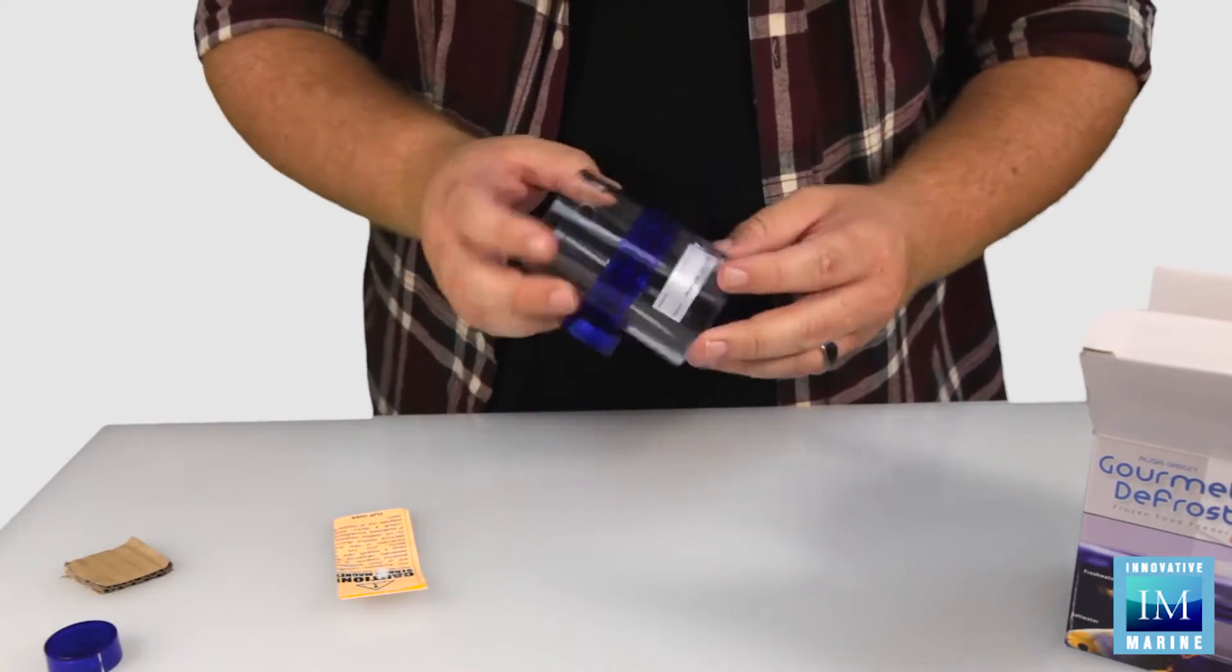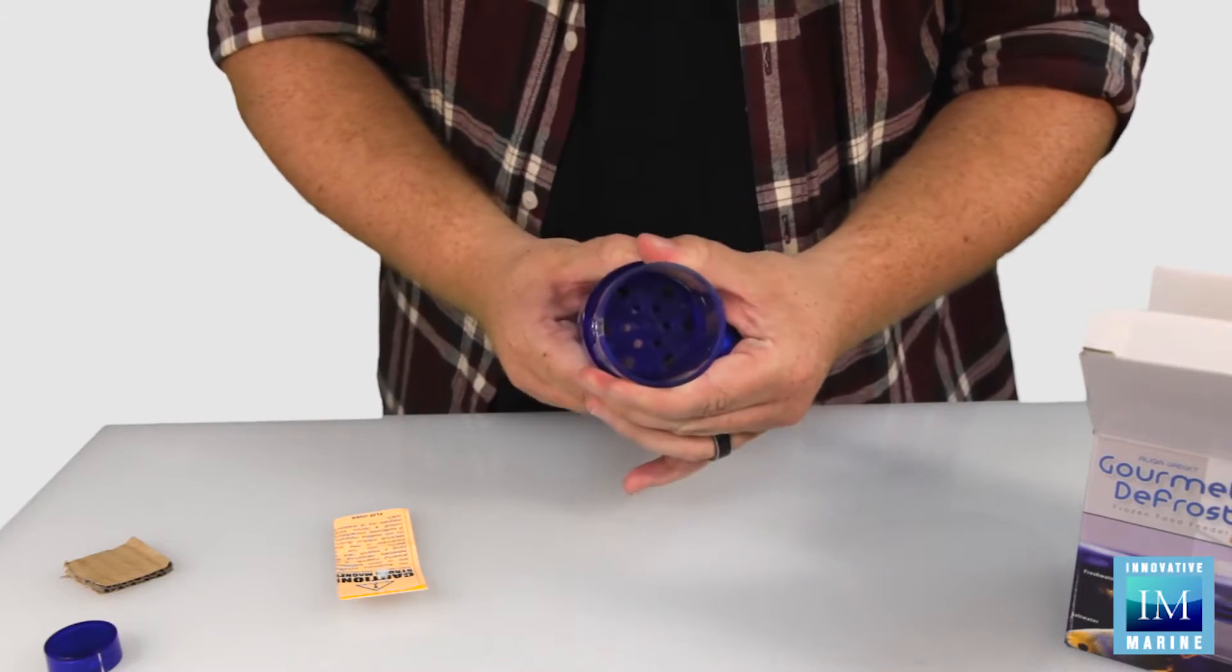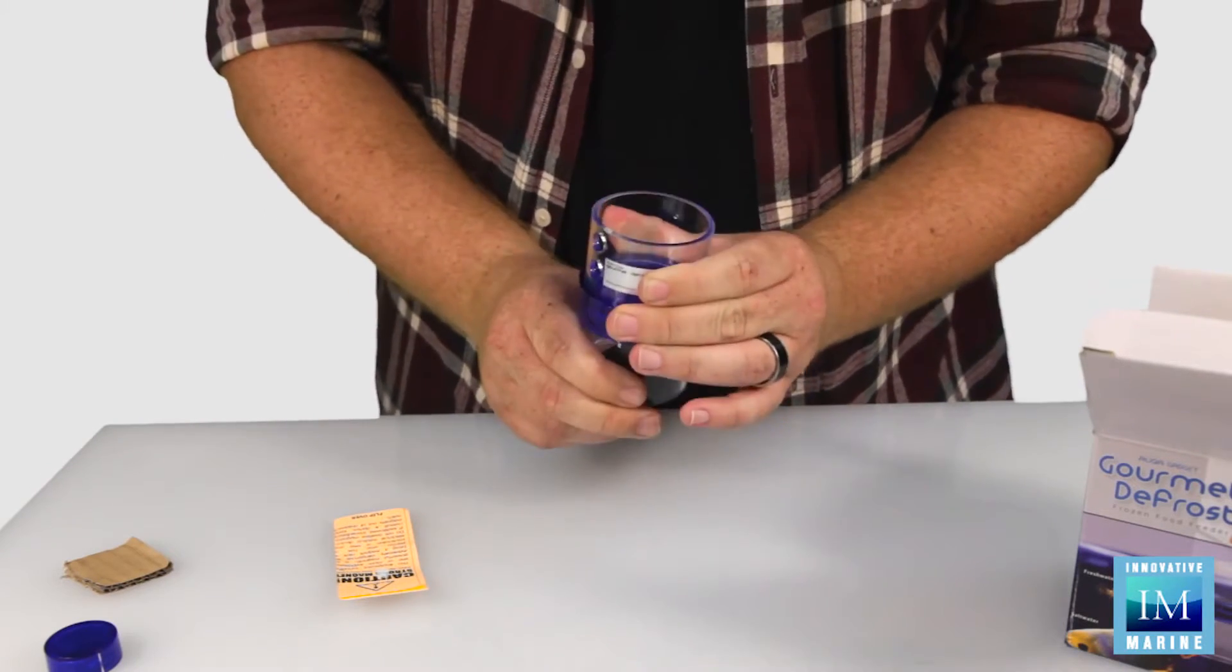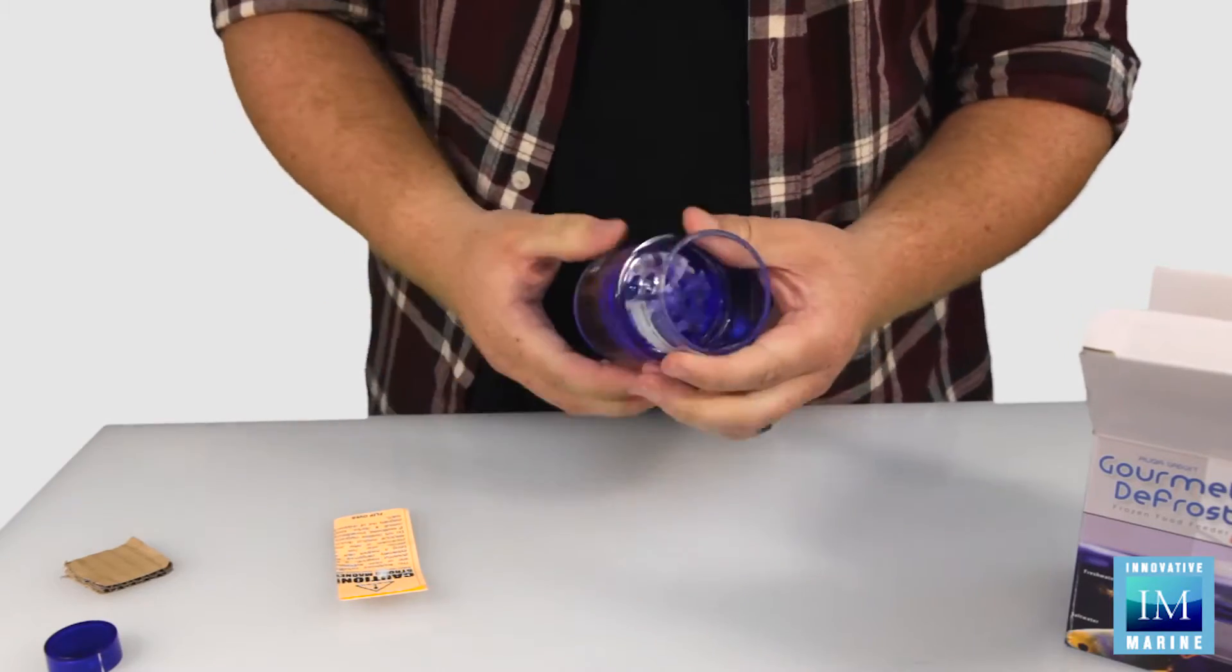There are a few different things to talk about with the defroster. The first is the open-closed design. It's pretty self-explanatory: the more open it is, the more food comes out; the more closed it is, the less food comes out.